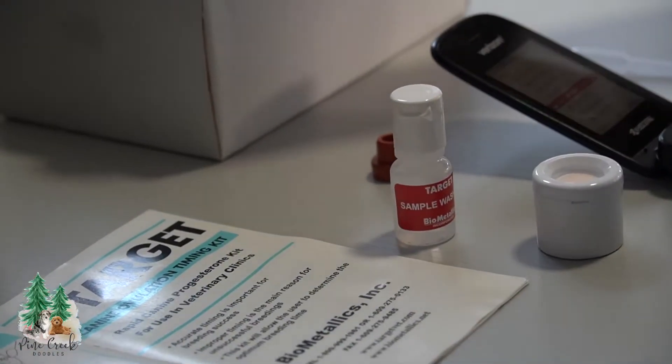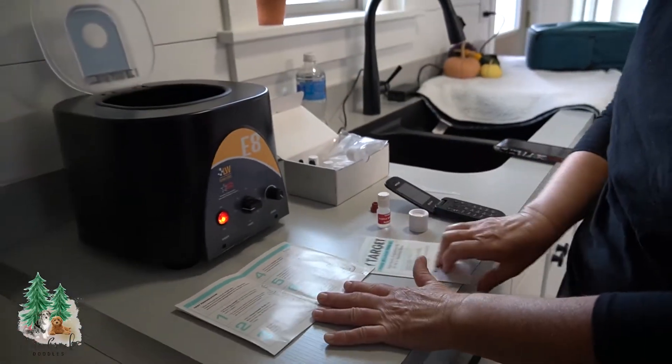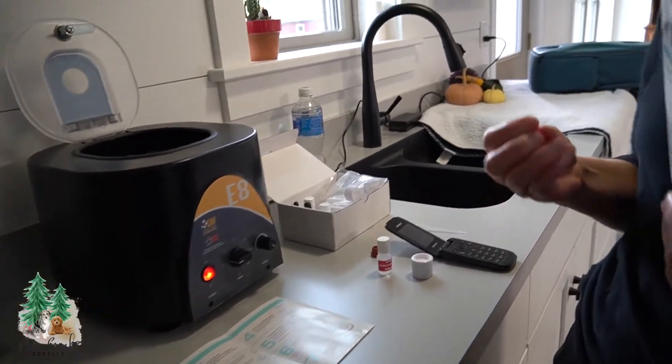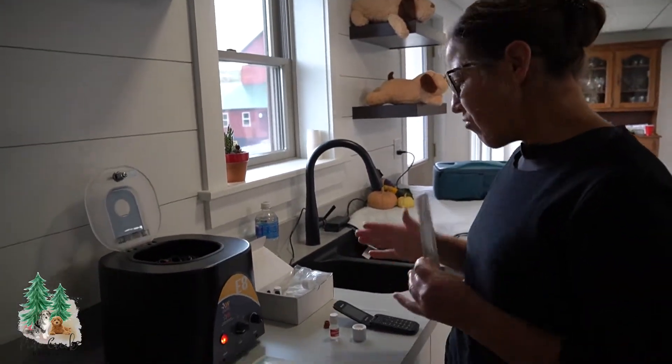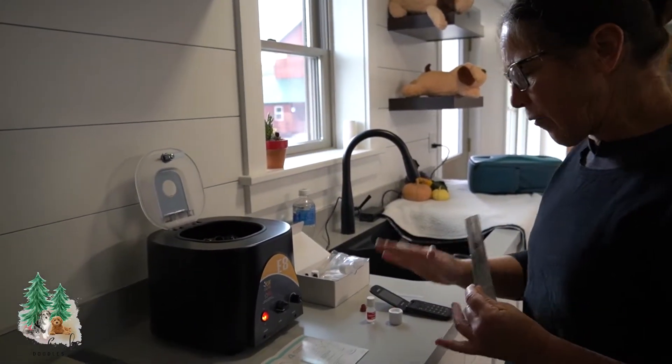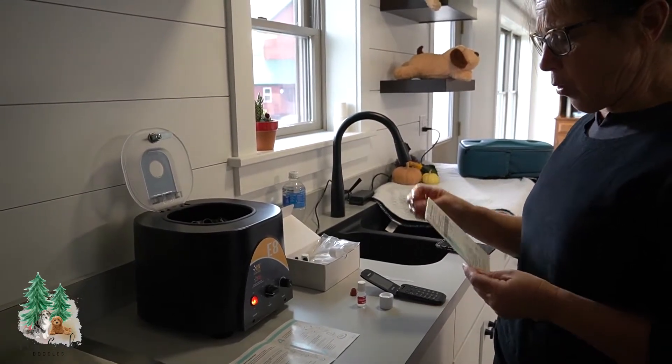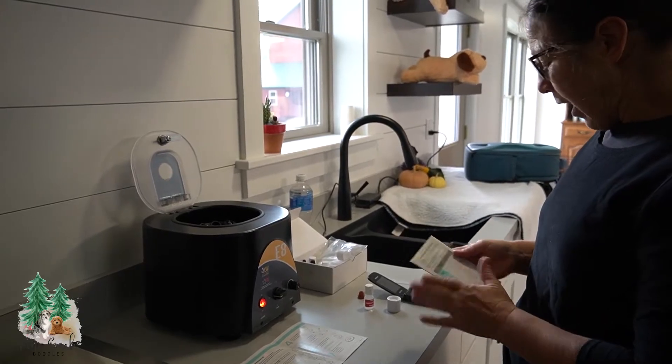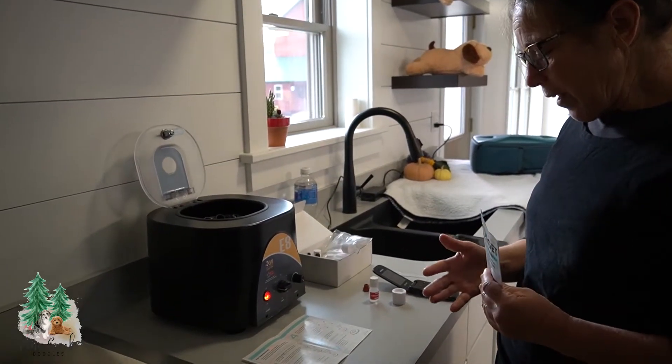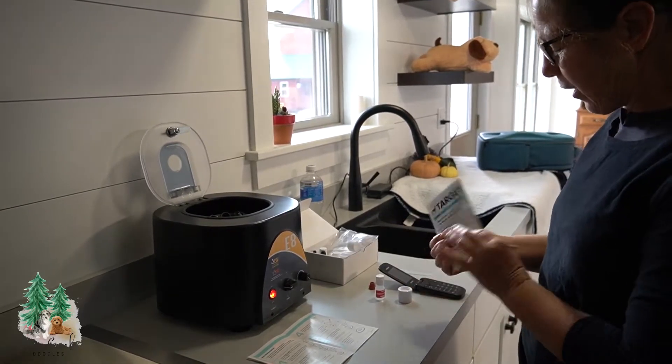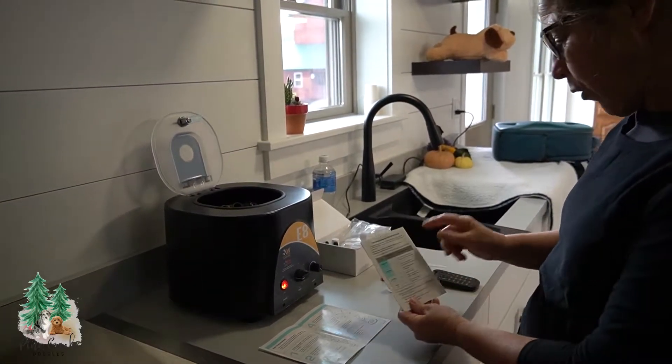And what this does is, it'll tell me how close my girl is and usually I wait until about day nine, eight or nine after I see the first sign of a heat and that is the female bleeding. So then we draw the blood at that time. We spin it and do our testing.